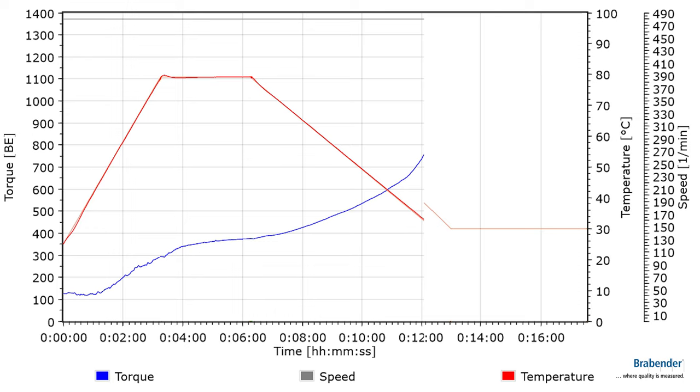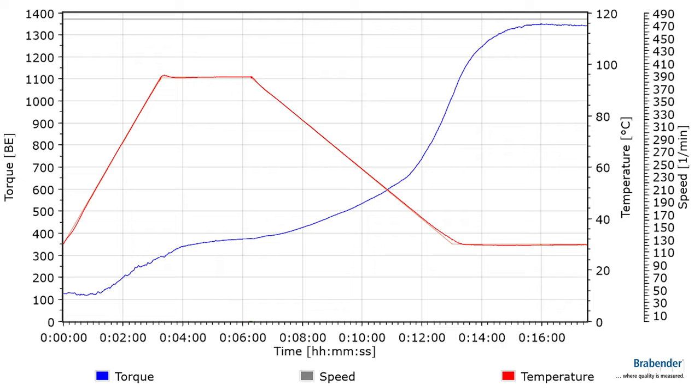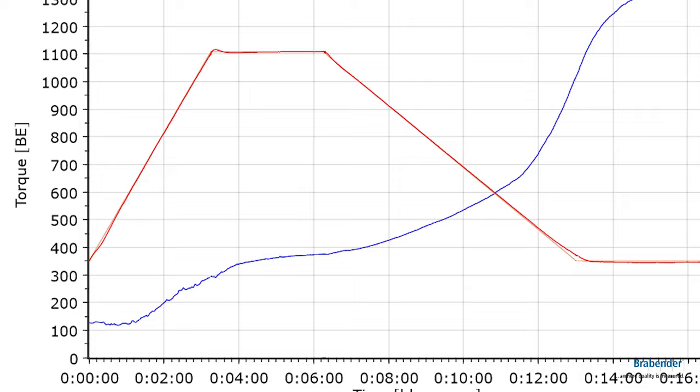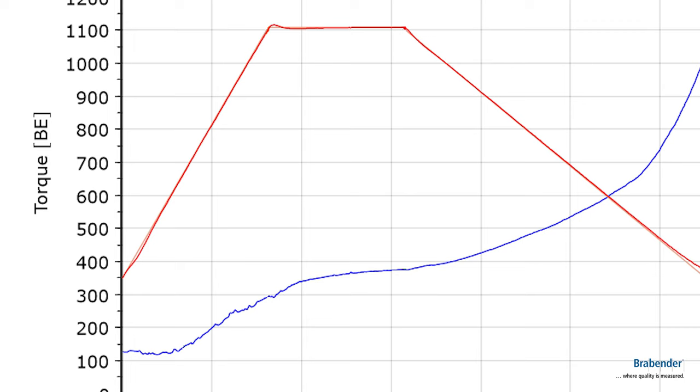The benefit of the ViscoQIC for characterization of seaweed is its high heating and cooling ability. We can heat with 20 Kelvin per minute, which allows us to reduce the measurement time extremely compared to other devices.